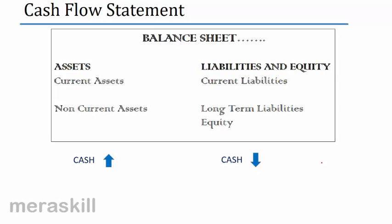If you look at the balance sheet, the cash flow statement explains the difference between the opening and closing cash balance. On the asset side you have current assets and non-current assets. On the liabilities side you have current liabilities, long-term liabilities, non-current liabilities, and equity.